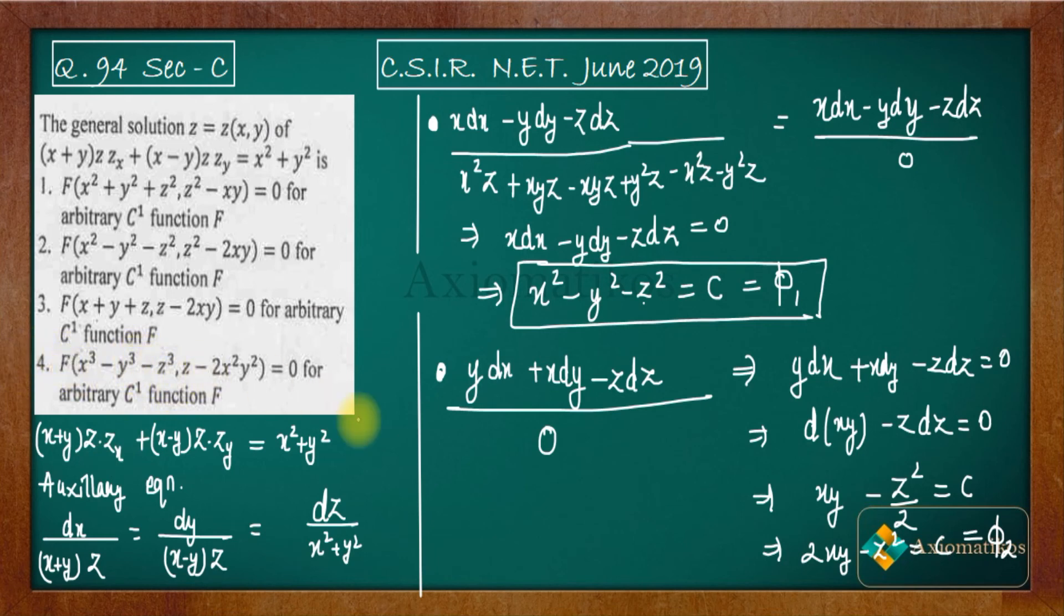Now in the fourth one we have x³ - y³ - z³, so obviously it is incorrect. In the third one you have x + y + z, so third is also obviously incorrect. In the second one you have x² - y² - z² and z² - 2xy. If you multiply both sides with minus, you will get this, which means second one is true. In the first one you have z² - xy without the factor of two, so first is also incorrect.